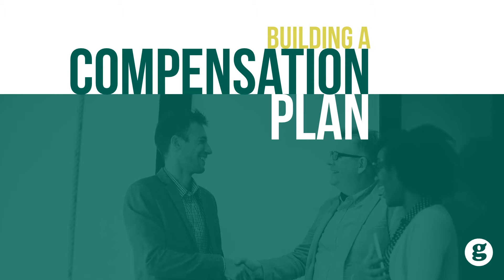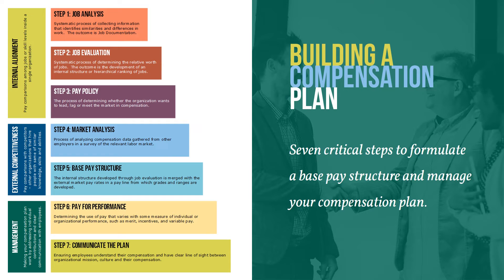A compensation plan takes you through seven critical steps to formulate a base pay structure and manage your compensation plan. To be effective, compensation must be perceived by employees as fair, competitive in the market, accurately based, and motivating as well as easy to understand. HR professionals might create a compensation plan for their organization, or they might work with an external compensation consultant to do so. A basic model for building a compensation plan includes three functional areas: internal alignment, external competitiveness, and compensation management. Seven steps or actions are organized in these three critical areas of a compensation plan development.